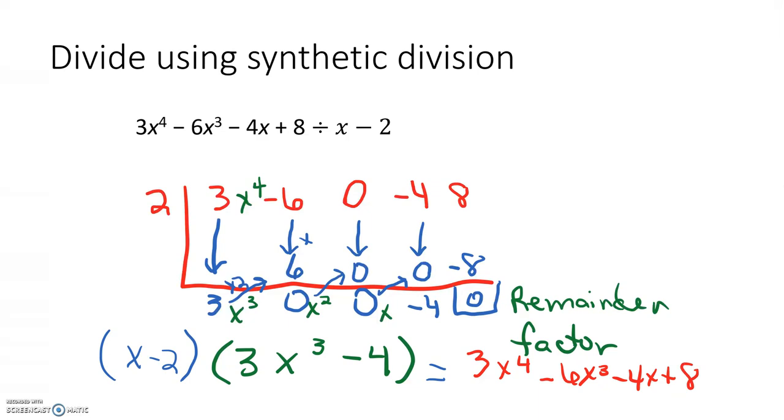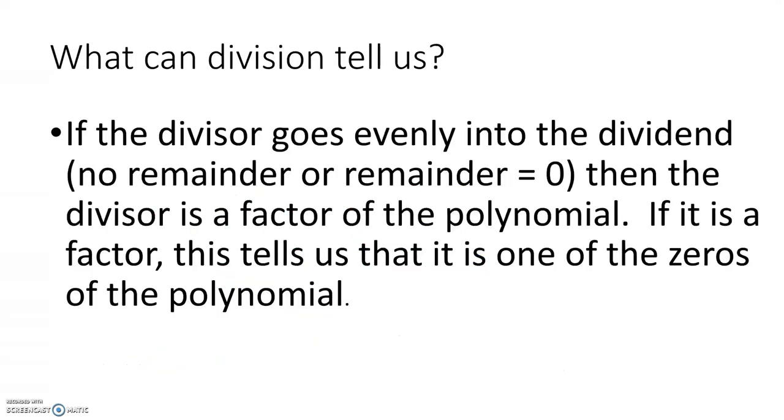What does this tell us? How does division help us? If the divisor goes evenly into the dividend and there's no remainder – or we could say remainder is equal to 0 – then the divisor is a factor of the polynomial. If it is a factor, this tells us that it is one of the zeros of the polynomial. Now you can open the Division of Polynomials, part 2.